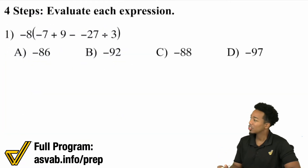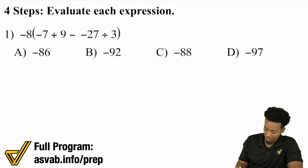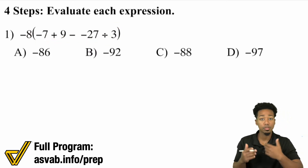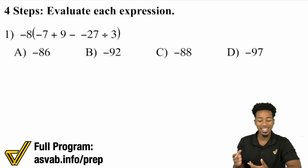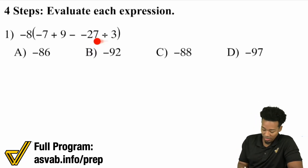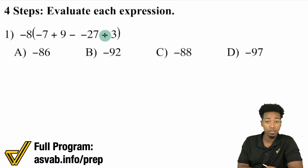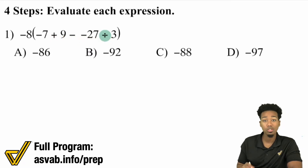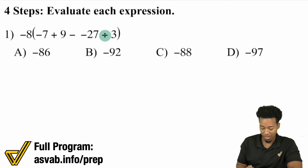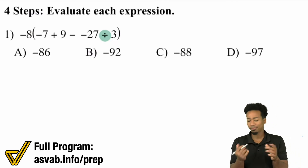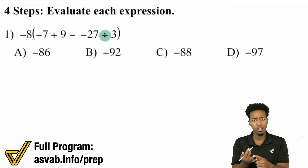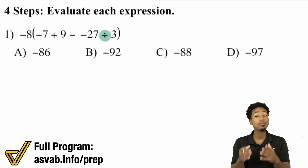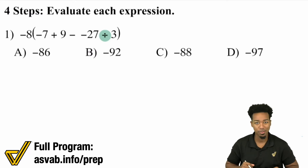Looking at this first one, we have negative 8, a set of parentheses, and everything inside. Remember, parentheses come first. So 27 divided by 3 — that division happens first. After that, all we have is addition and subtraction, then we multiply by negative 8. So the plan is: take care of the division, handle the addition and subtraction, then multiply by negative 8. That's way better than having no plan at all.